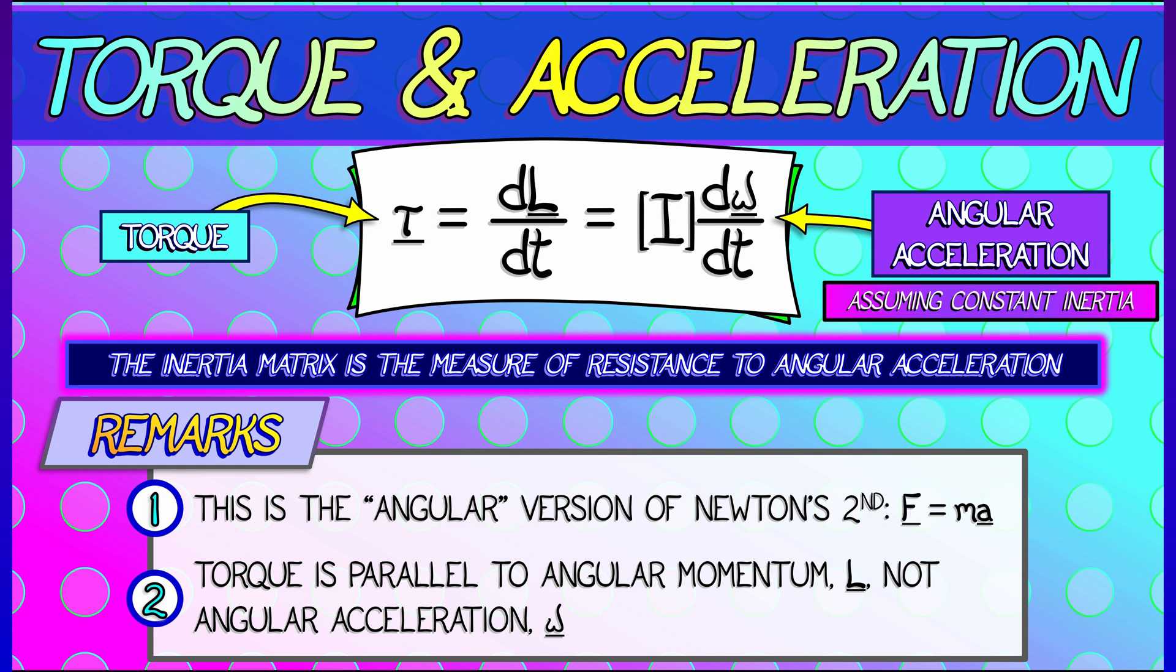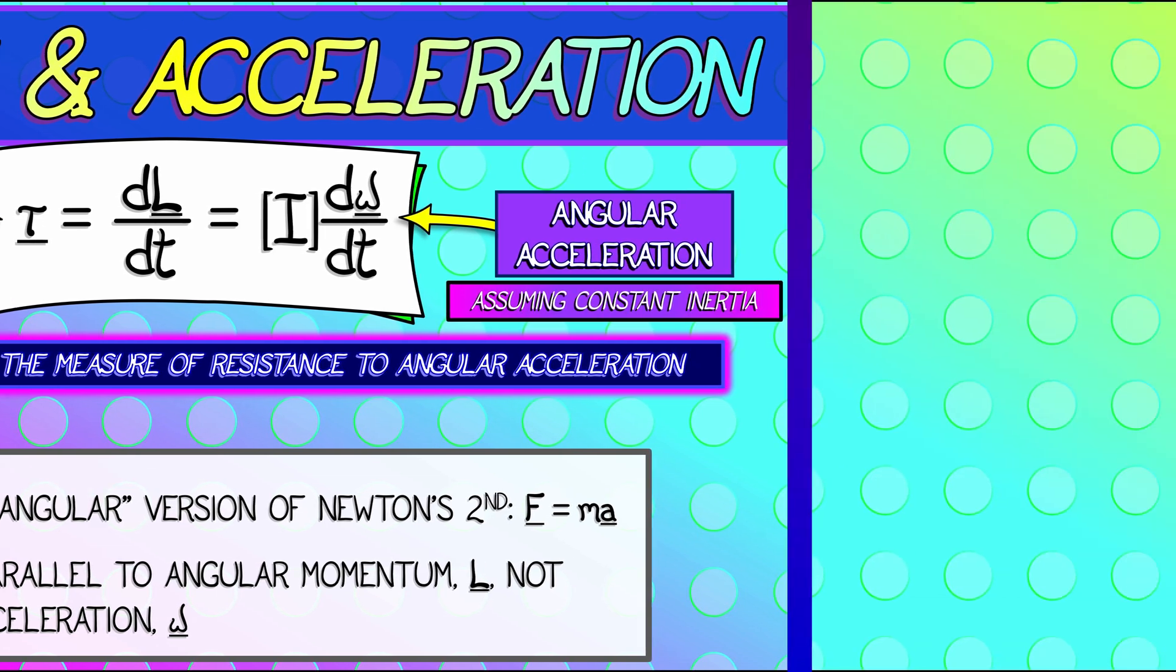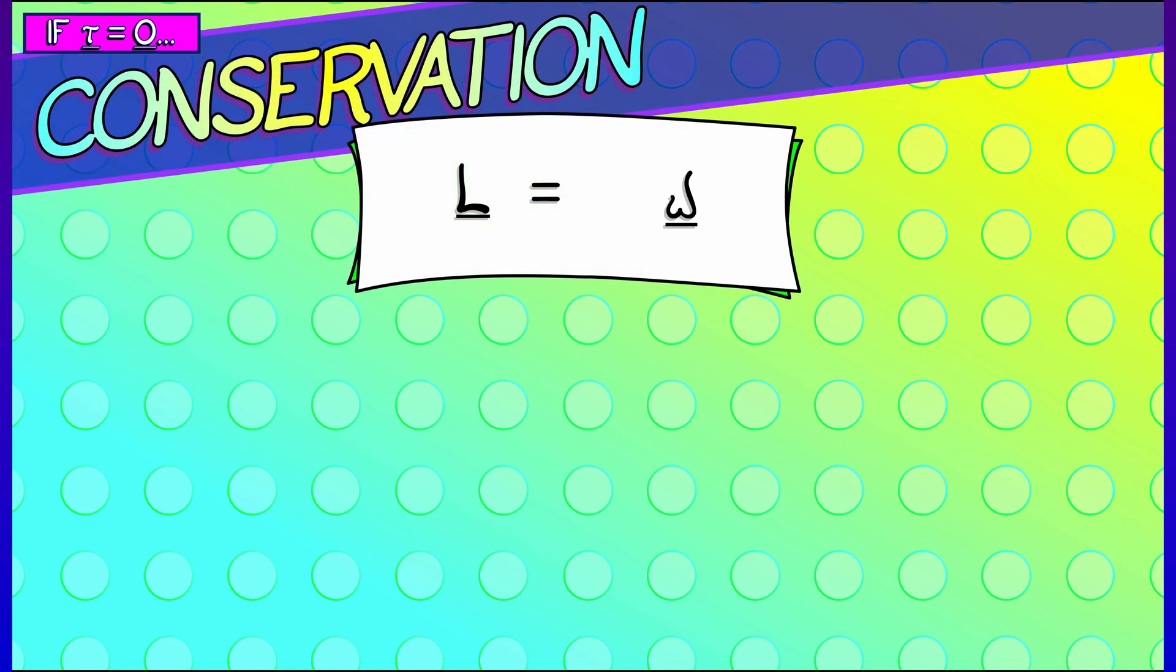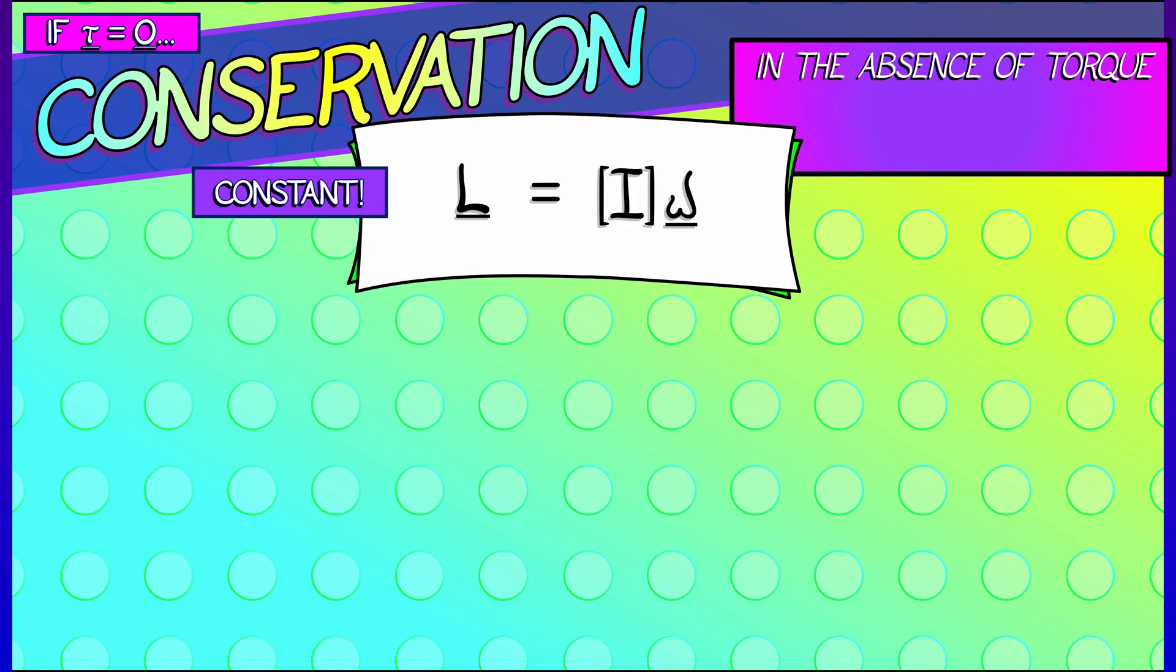And from this expression, that torque is dL/dt, we see that if the torque is zero, if there's no torque applied, then we have conservation of angular momentum, and L is a constant, namely I times ω.